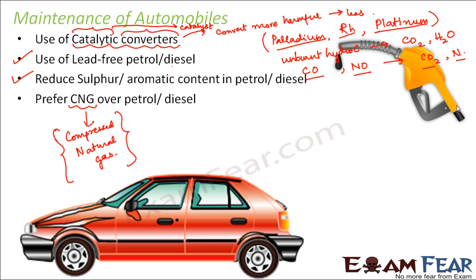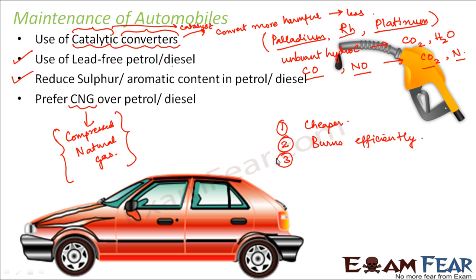Some of the advantages of CNG over petrol or diesel are as follows. One good advantage is that CNG is quite cheaper when compared to petrol or diesel. The second thing is it burns quite efficiently, meaning it doesn't leave a lot of residue behind, so that unburnt residue is quite small and only a very small part is left behind to cause any sort of problem to the environment. So it is quite an efficient fuel.